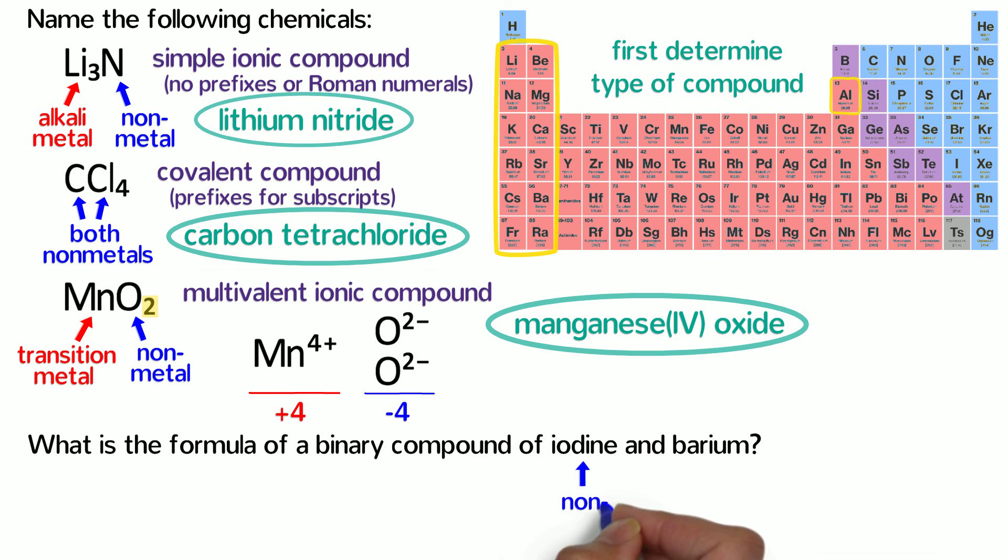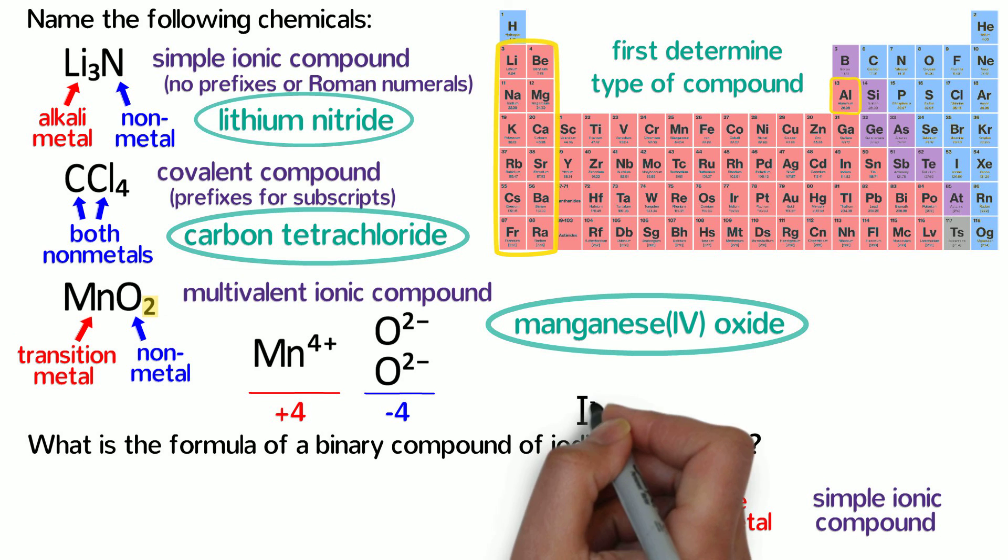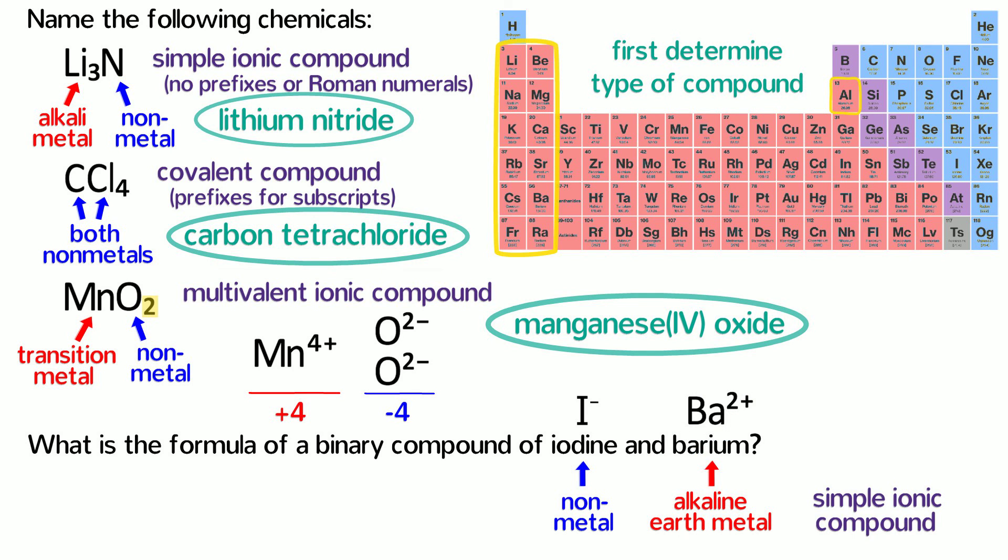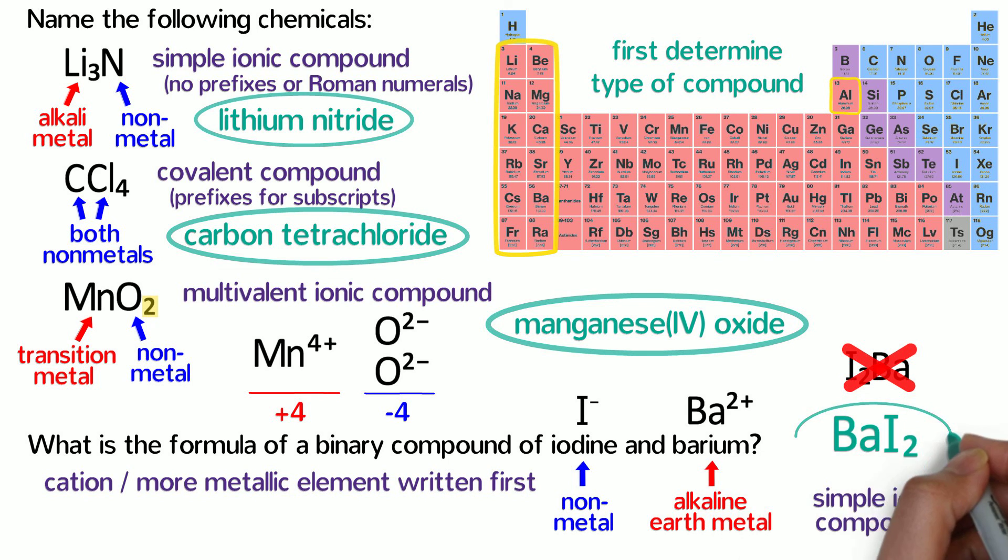The last compound is a nonmetal and an alkaline earth metal, so it's another simple ionic compound. Iodide, like all halides, has a negative 1 charge, and barium in the second column has a positive 2 charge. You may at first think the formula would be I2Ba, but that's incorrect because the cation, or more metallic element, should be written first. So the formula is BaI2 and the name is barium iodide.